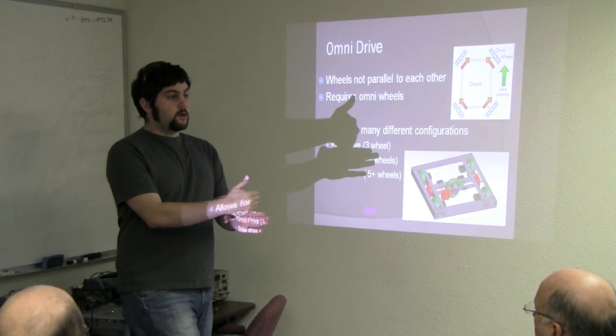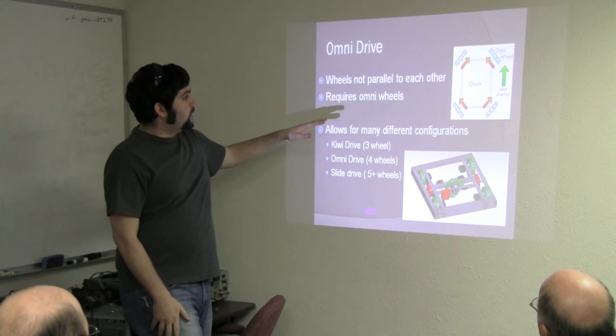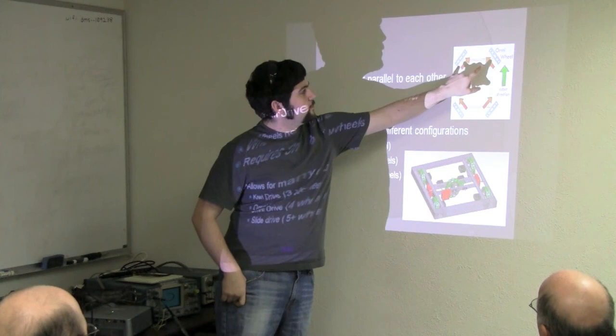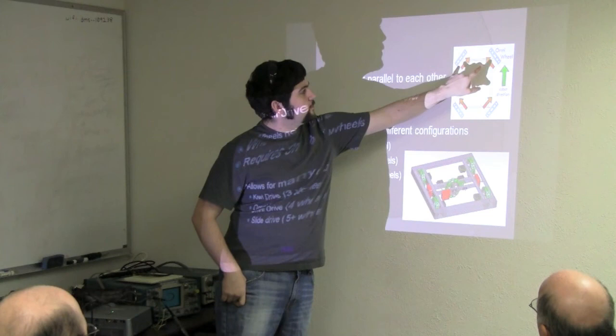I have two examples up here. This is the traditional four-wheel omni drive. Essentially, as these two wheels rotate forward and these two wheels rotate out, this robot will move forward, but part of the power is being lost as it's slipping. But that's the whole point of an omni wheel is to